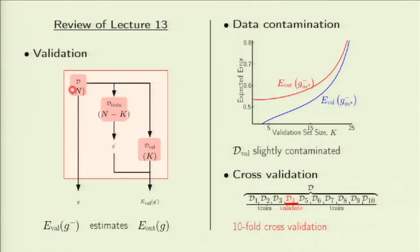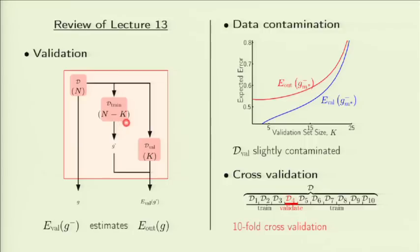Welcome back. Last time we talked about validation, which is a very important technique in machine learning for estimating the out-of-sample performance. The idea is that we start from the data set with n points, set aside k points for validation, and train with the remaining n minus k points. We end up with a hypothesis labeled g minus, and use it to get an estimate of out-of-sample performance via the validation error. There is a leap of faith when we put back all the examples to come up with the best possible hypothesis.